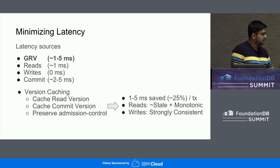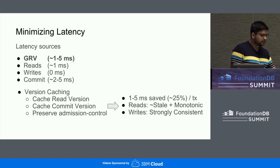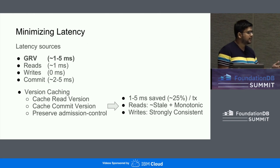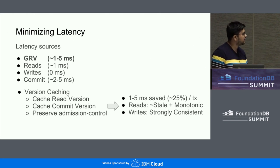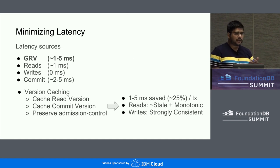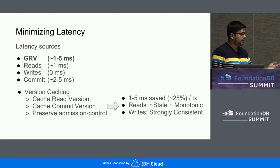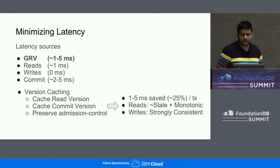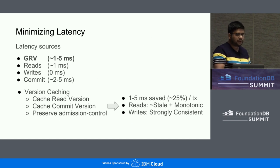Monotonic in the sense that because we are caching all the read and commit versions in a process, a transaction never gets to see data older than the last transaction that happened — it will see data at least as new as the last transaction. We have to be careful here because GRV is not just a mechanism to hand out the read version. It is also an admission control mechanism used by the proxy to control incoming transactions, and the proxy slows down the response to GRV if the cluster is under load. If we aggressively bypass the GRV call, we would defeat that mechanism.